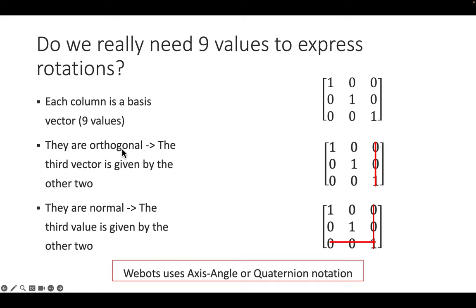Orthonormal means that once you know two of the three basis vectors, you can compute the third because it must be orthogonal to the other two — just like the right-hand rule. So we can drop those three values; they're computable. Additionally, since the vectors are unit length (length one), if you give two components of a vector the third can be computed, because the overall length must be one. These four numbers aren't exactly axis-angle or quaternion notation, but they provide the intuition for why four numbers are enough.